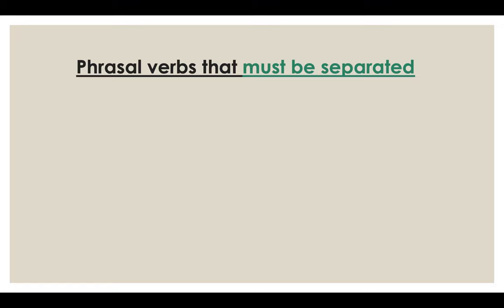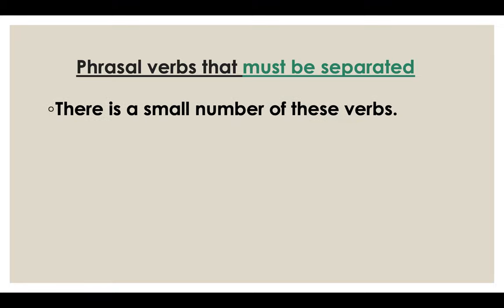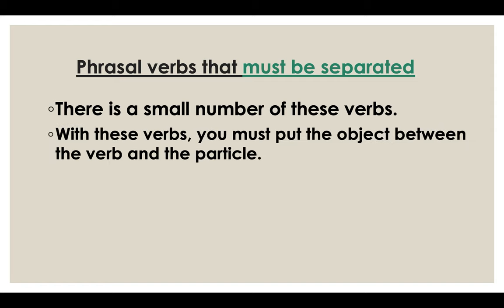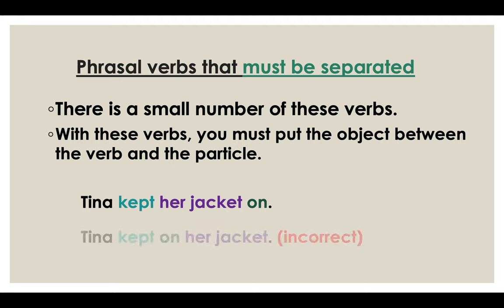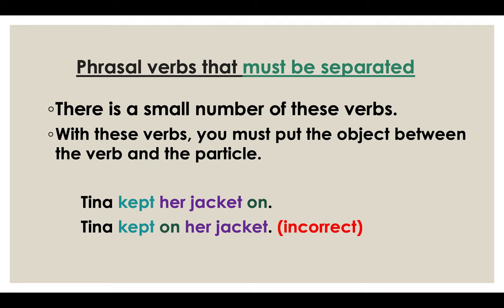Phrasal verbs that must be separated — there is a small number of these. With these verbs, you must put the object between the verb and the particle. Like in this example: Tina kept her jacket on. You cannot say Tina kept on her jacket — that's incorrect, because keep on is always separated. You must separate this phrasal verb.